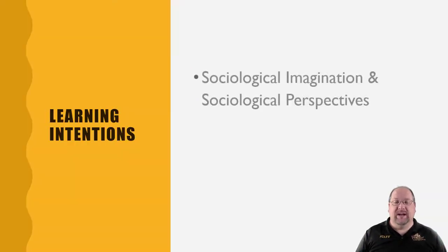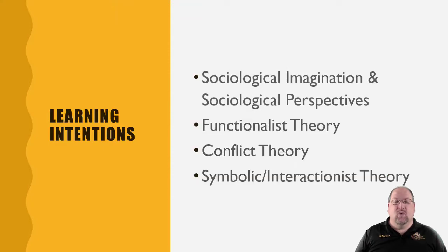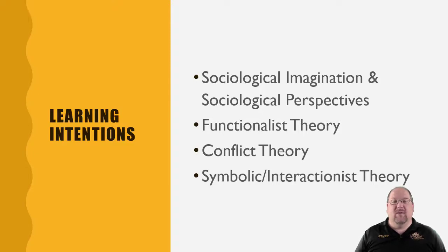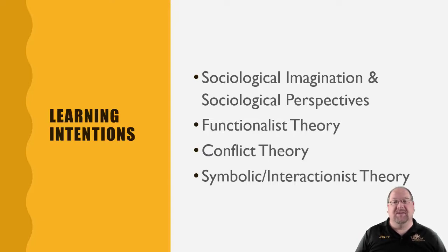Learning intentions. We're going to identify what the sociological imagination and sociological perspectives entail. We'll look at functionalist theory, the conflict theory, as well as the symbolic interactionist theory, and how looking from these three different perspectives can give us three different viewpoints or lenses as to what's going on within a group, within a society, and even within the world.